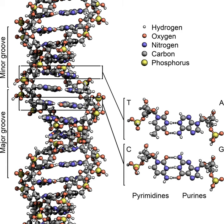A second nick allows the strand in the second chromatid to pull apart and anneal to the remaining strand in the first helix, forming a structure known as a cross-strand exchange, or a Holliday junction. The Holliday junction is a tetrahedral junction structure which can be moved along the pair of chromosomes, swapping one strand for another. The recombination reaction is then halted by a cleavage of the junction and religation of the released DNA.